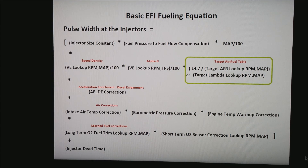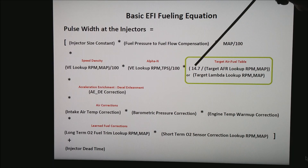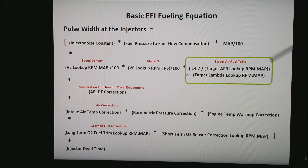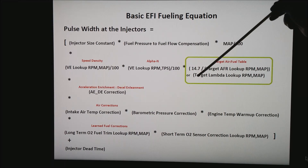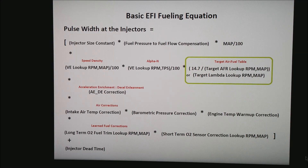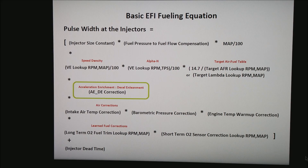The next piece is the target AFR table. If your table is in AFR, then it uses the top equation: 14.7 — the stoichiometric ratio for gasoline — divided by the target AFR from your lookup table. If you happen to be using lambda in your AFR lookup table, then it simplifies a little bit: you no longer have the 14.7, and all you get is the lookup table value.